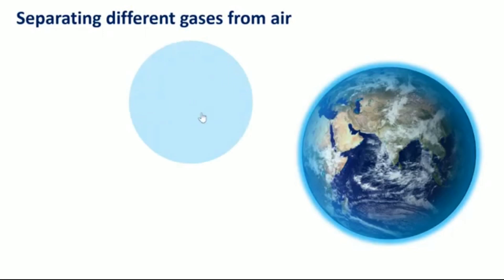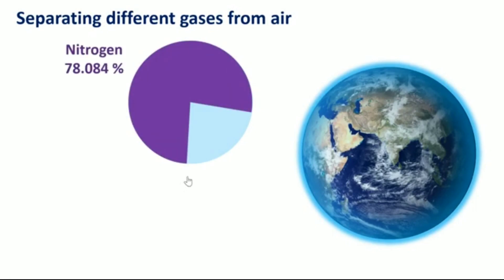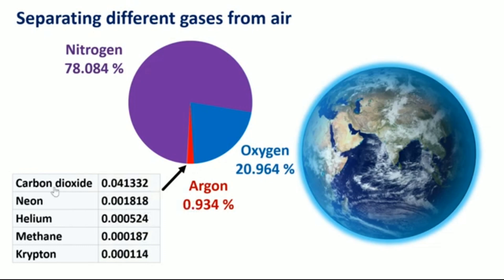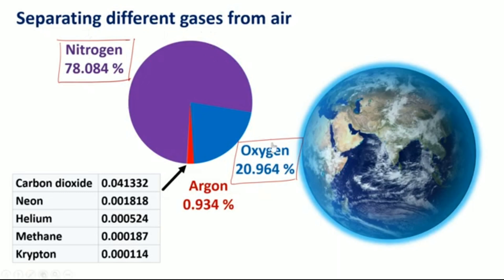We know that air is a mixture of gases like nitrogen, oxygen, argon, carbon dioxide, helium, neon, krypton, xenon. Even dust particles and water vapor are present. Nitrogen is present at 78%, oxygen at 20.96%. Then we have traces of other gases: argon 0.934%, carbon dioxide 0.04133%, neon, helium, methane, krypton. Among these gases, we derive and separate oxygen.